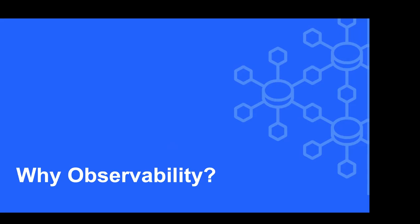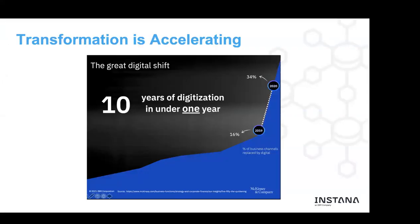Why has observability become a thing today versus just the next version of APM? The primary reason is that digital transformation is accelerating across both large and small businesses. As a bit of trivia, the term 'digital transformation' was first used in 1943 — though not quite the same as today. Today we're trying to accelerate paths to market, become better-performing IT organizations, and make our applications work better.